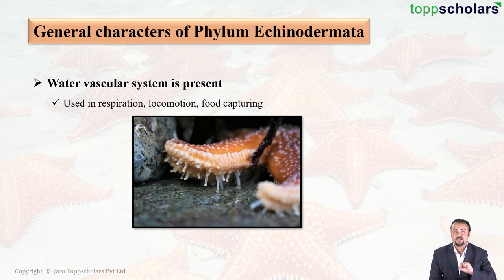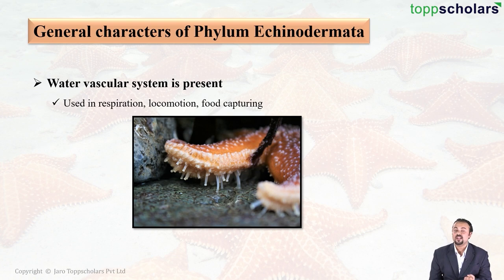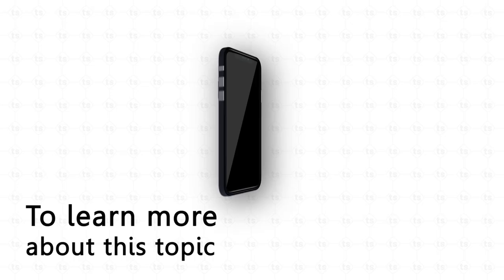If water is given out to the right of the starfish, the starfish will move towards the left — so the water vascular system is also used in locomotion. Finally, when the water comes in it sometimes brings in certain food particles, and therefore it is also used in capturing food.